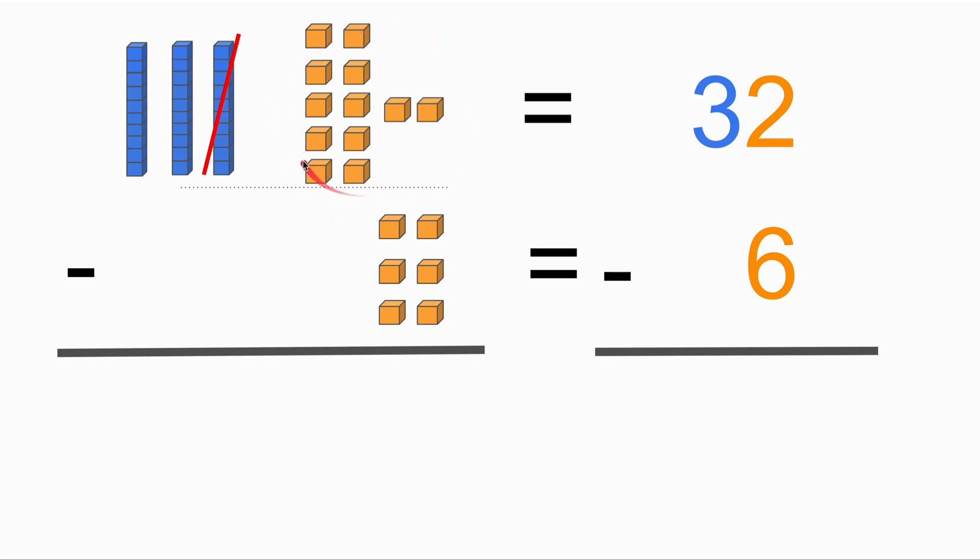So now what we can do is we can use the 12 orange blocks to minus six. So if 12 minus 6, we got 6. So we got 6 at the ones place. And how many blocks we've left at the tens place? One, two. So we actually got two tens. So total, we can obviously see the result now, so it's 26.